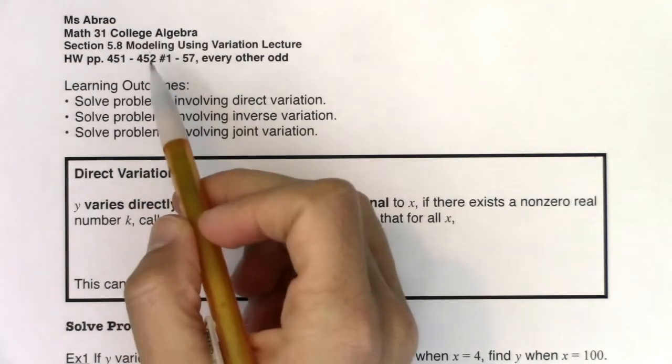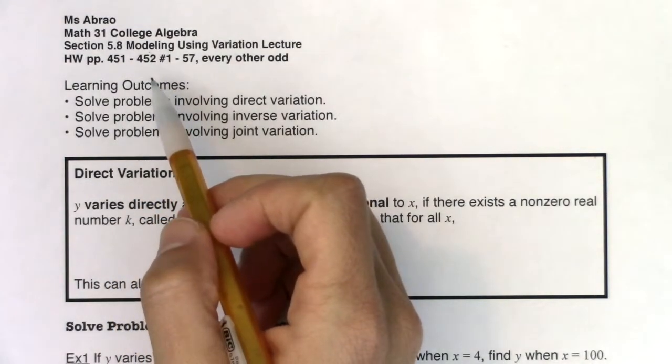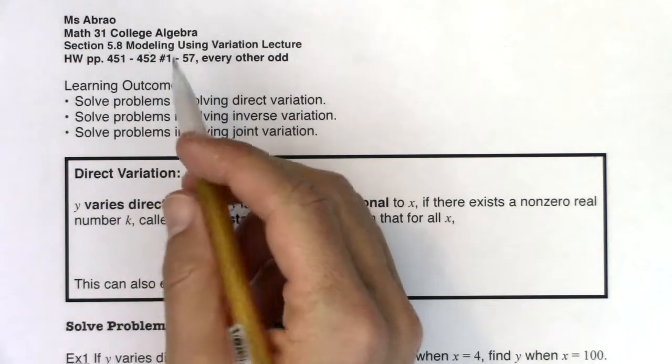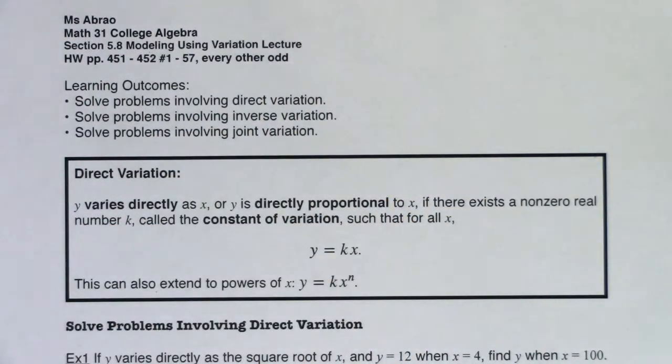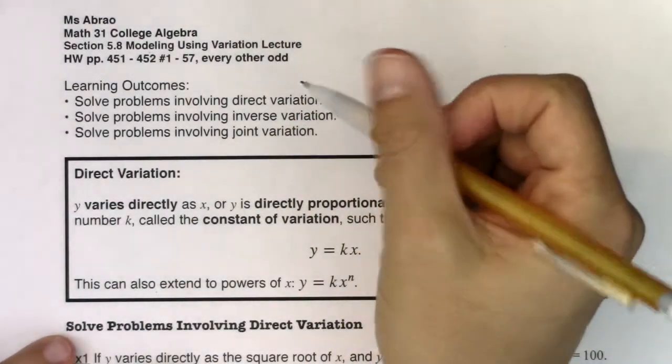You've heard this phrase modeling before when we were talking about regression, meaning we were looking at data and fitting either a linear, a cubic, a quartic, a quadratic model. This is a little bit different. It's not going to involve data, but we are going to look at different types of variation.